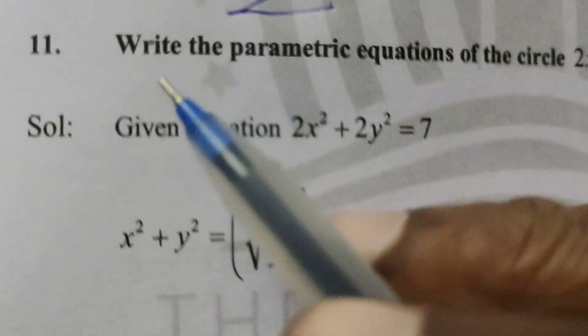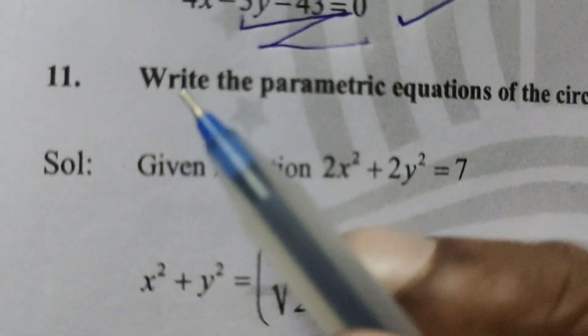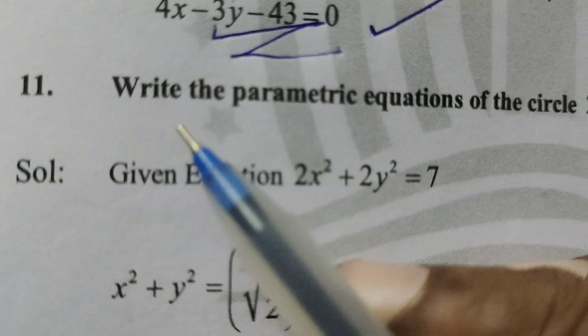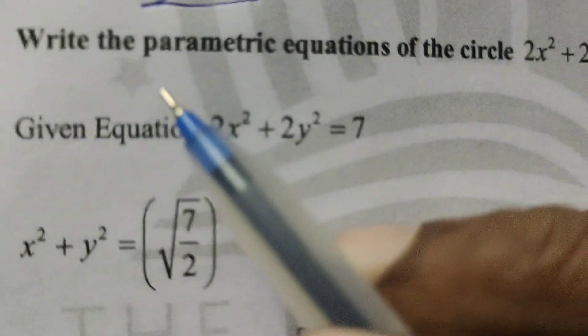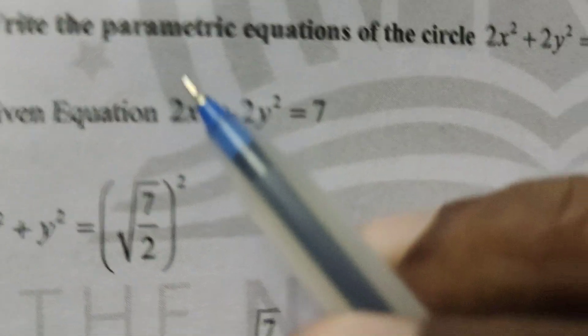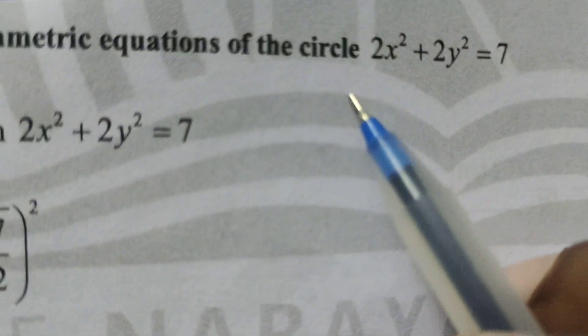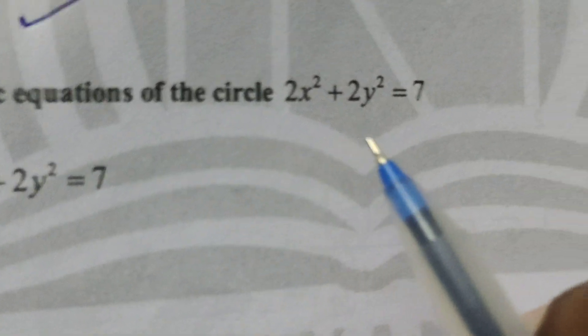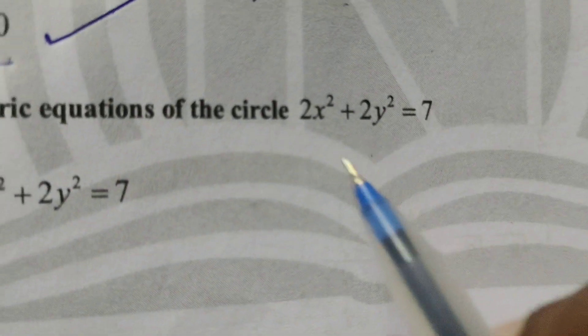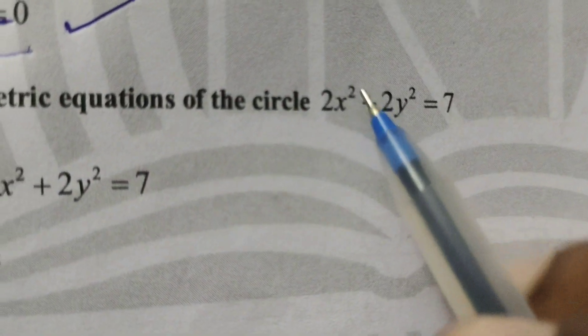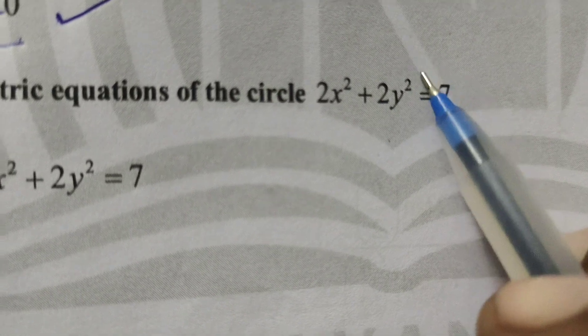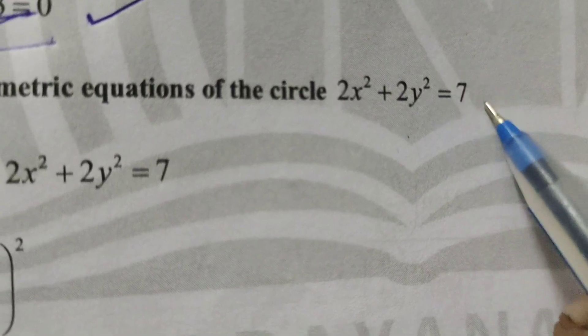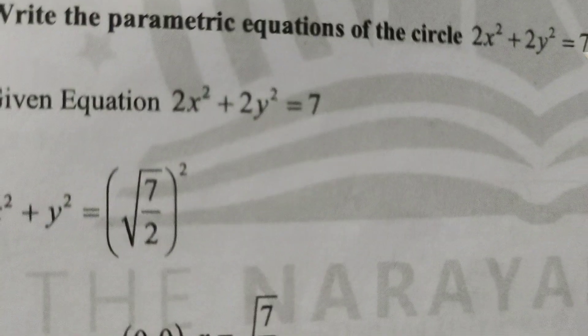This is Dr. Aethi. Today we are going to explain the parametric equation of the circle 2x squared plus 2y squared equals to 7.